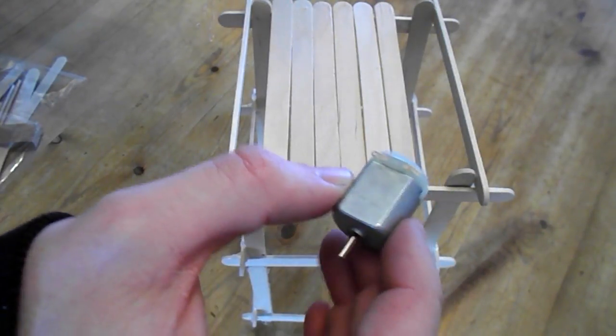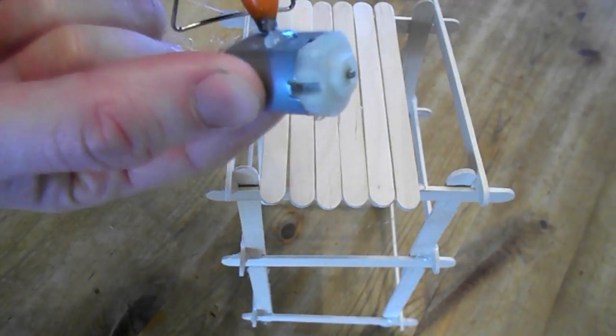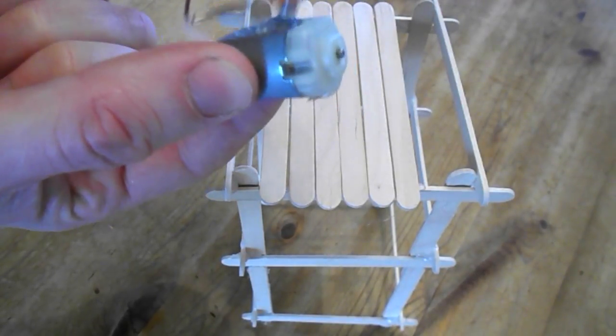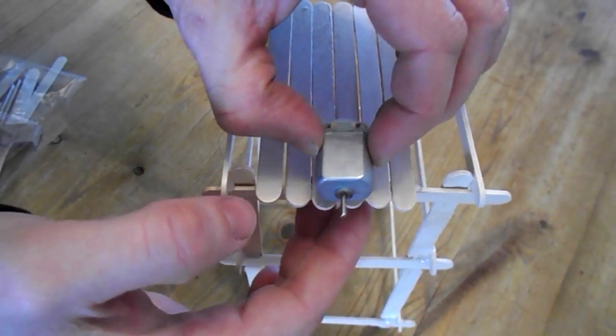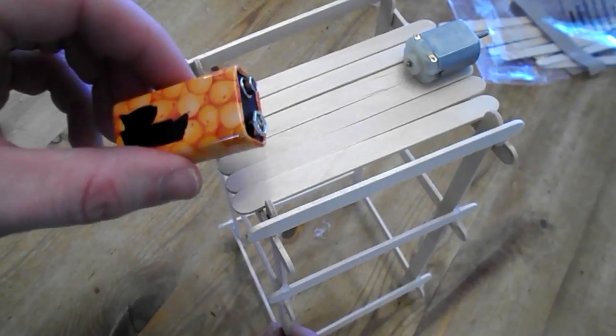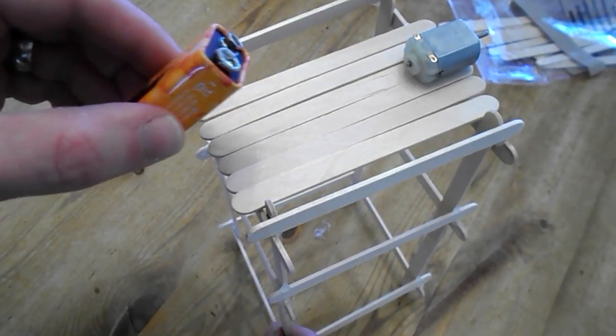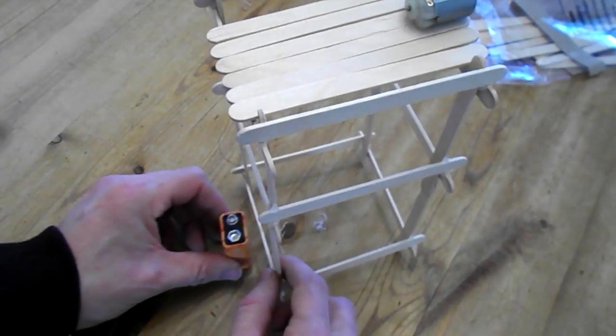Glue your motor on. Now the battery is just going to be a small 9 volt one. I'm going to glue this the opposite side of the motor as a counterbalance at the bottom.